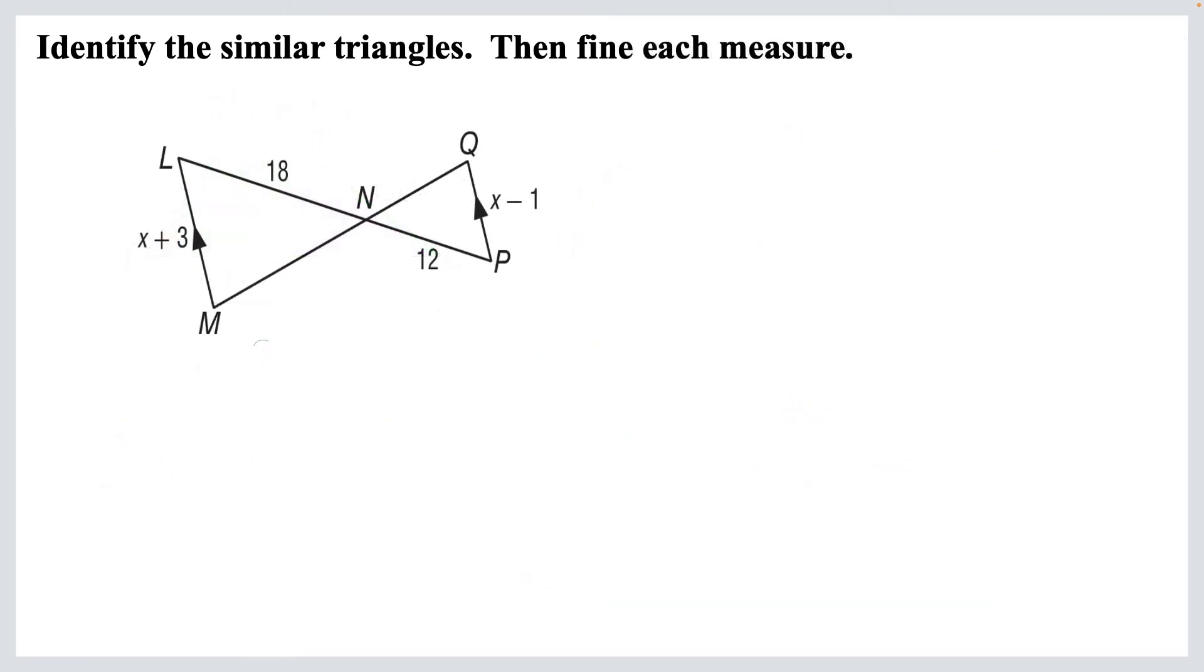Just a couple more. Identify the similar triangles, then find each measure. Alright, again, look, we've got these arrows, which means we've got parallel lines. And any time you see parallel lines, you want to be looking for those special angle relationships, like corresponding angles, or in this case, alternate interior angles. So we've got a pair of alternate interior angles there, and right there.